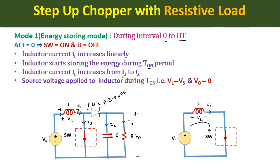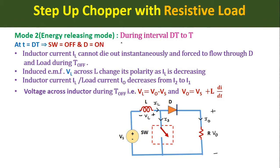Applying KVL in the Mode 1 loop, the source voltage appears across the inductor, so VL = Vs. Since the load is disconnected from the source, the output load voltage is equal to zero in Mode 1 operation. Mode 2 is the energy releasing mode, occurring during the interval t = dT to t = T, which is the chopping period.